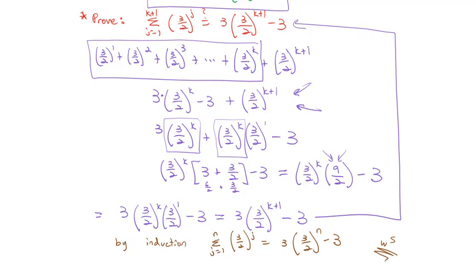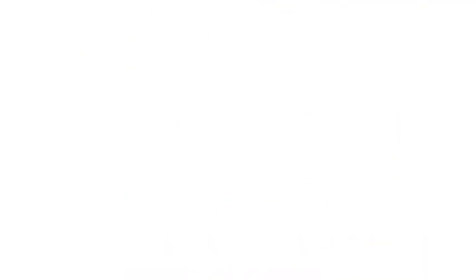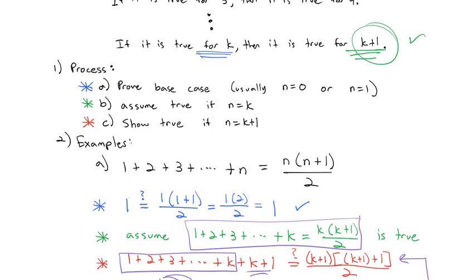However you like to end your proofs — QED, a little box, or w to the 5th meaning 'what we wanted' — that becomes the process of induction. Induction as a theory is very simple: we do the same thing every time. We start by proving a base case, assume it's true if n equals k, then show it's true if n equals k plus 1. The challenge comes in that last step with the algebraic manipulation — sometimes you need to be creative and try a few things until you find the correct method, very similar to how we did proofs with trig functions. The best way to get good at these is to practice, so now it's your turn.